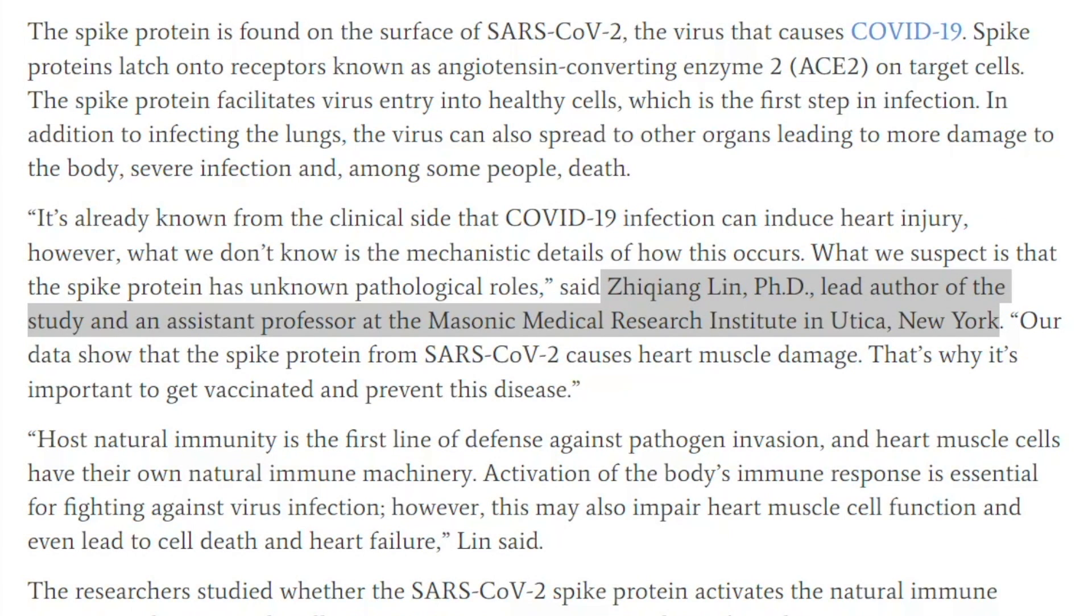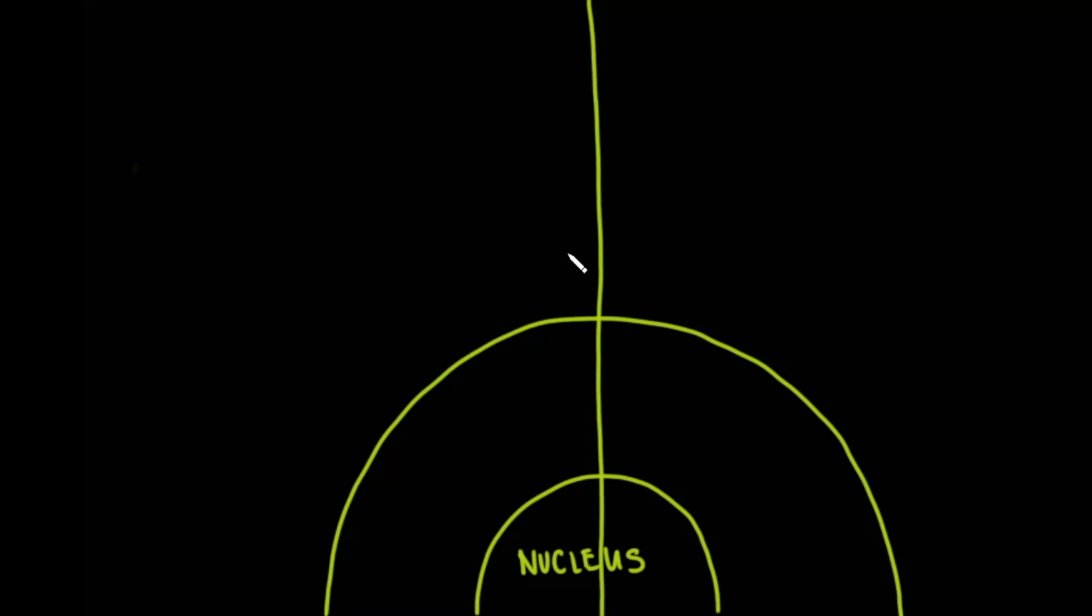So this study was performed at the Masonic Medical Research Institute in Utica, New York, and the lead author of the study and the assistant professor there was Dr. Zhu Cheng Lin. So what they did was they looked at a mouse model and they wanted to infect mice in two different ways to show the difference between the spike protein and other coronavirus spike proteins, specifically the SARS-CoV-2 and another human coronavirus. Now, the first thing you need to understand is that mice cells have an ACE2 receptor, but it is completely different than the ACE2 receptor that we see in human beings. In fact, the ACE2 receptor in mice do not interact in any way with the spike protein on SARS-CoV-2.